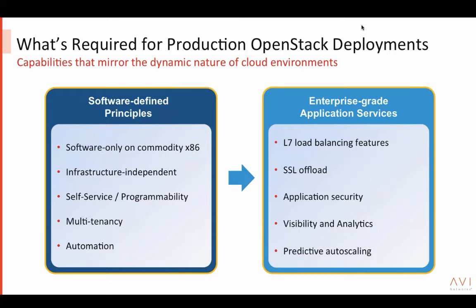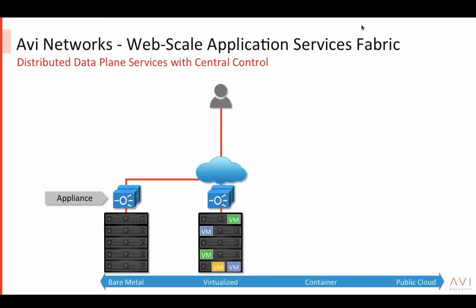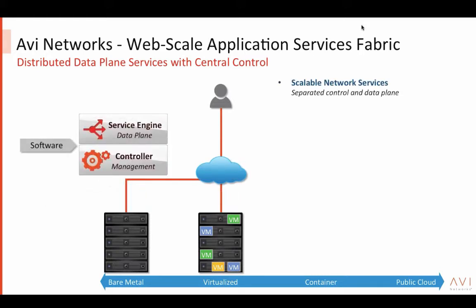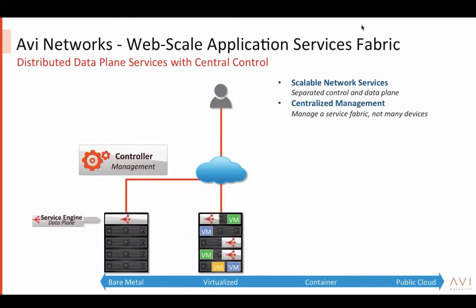Let's look at what one such solution might look like. Here at AVI Networks we've built an enterprise-grade web-scale application services fabric. In any legacy network deployment, you have racks of servers running bare metal or virtualized workloads, with an active-standby pair of load balancing appliances. We looked at that and said: let's separate the control plane from the data plane — a centralized control plane and a distributed data plane, exactly following software-defined principles.